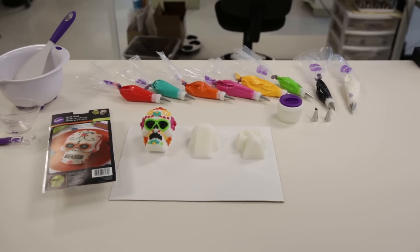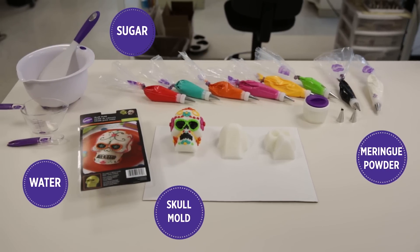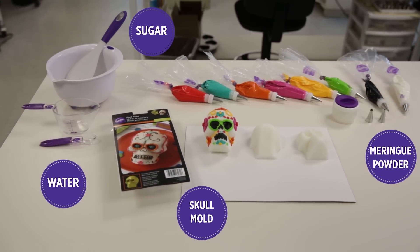To make the skull, you will need 1 1⁄2 cups of granulated sugar, 1 1⁄2 teaspoons of Wilton Meringue Powder, and 1 1⁄2 teaspoons of water.